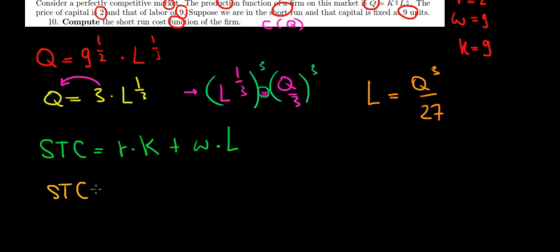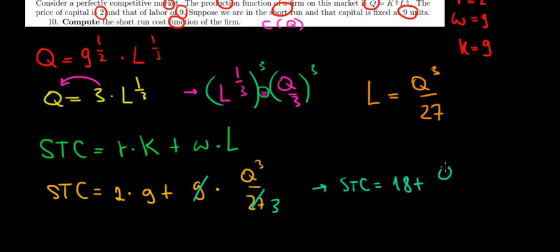Short run total cost function is equal to interest rate 2 times capital 9 plus the wage is also 9. And then the labor function is Q to the power of 3 divided by 27. Let's work out some math over here. 9 and 27 cancel out. So this is left with 3. 2 times 9 is 18. So that means the short run total cost function is equal to 18 plus Q to the power of 3 divided by 3. And that's it.